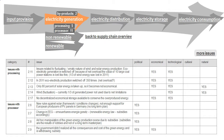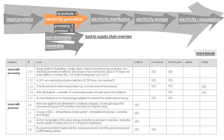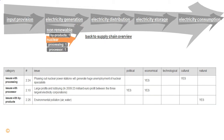Now we can look at the example of electricity generation, where the documentaries identified many more issues. By clicking on the More Issues button, we will see a second screen with the rest of the list. Let us now zoom into the non-renewable issues, and zoom further into the nuclear issues, and see the number — or lack — of processing, processor, and by-products related issues.